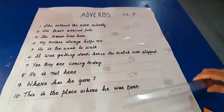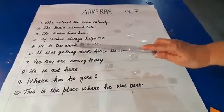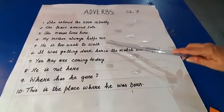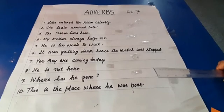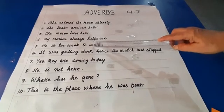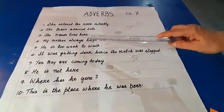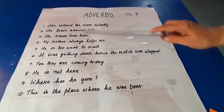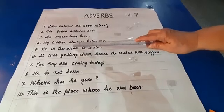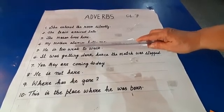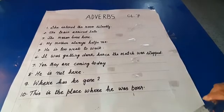Sentence number four: my mother always helps me. 'Helps' is my verb. How often does mother help me? The answer points to 'always.' Therefore, 'always' is the adverb in this sentence.